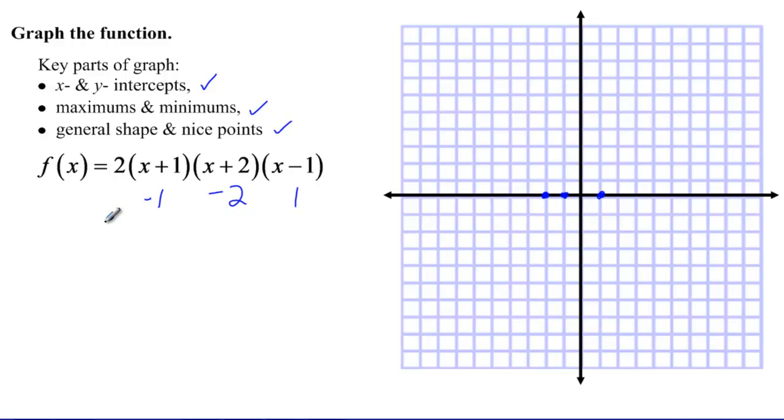Now I also know that the degree of this function is three, because x times x times x is x cubed, and I know my leading coefficient is going to be two. And so because it's a positive leading coefficient, and an odd degree, the graph is going to look something along the lines of that.